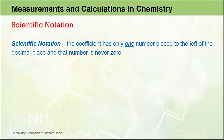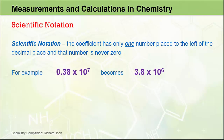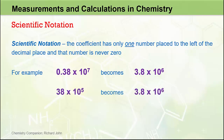In scientific notation, the coefficient has only one number placed to the left of the decimal place, and that number is never zero. So for example, a number that takes the form 0.38 × 10 to the 7 would be better expressed as 3.8 × 10 to the 6. We've changed the coefficient from 0.38 to 3.8 by multiplying it by 10, and so we've had to decrease the exponential part by a factor of 10 — from 10 to the 7 to 10 to the 6. Conversely, a number like 38 × 10 to the 5 is best expressed as 3.8 × 10 to the 6. The coefficient has only one number to the left of the decimal place, and it's not zero.